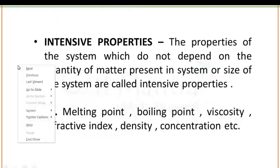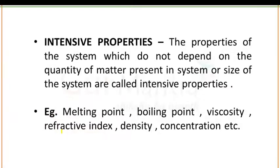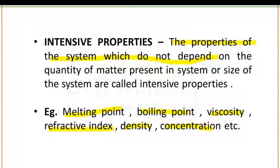Second is intensive property: properties of the system which do not depend upon the quantity of matter present in the system or the size of the system. Examples include melting point, boiling point, viscosity, refractive index, density, and concentration. For instance, whether you take one gram of salt or one kilogram of salt, the melting point of NaCl is never going to change — it remains 1081 Kelvin. That is an example of intensive property.